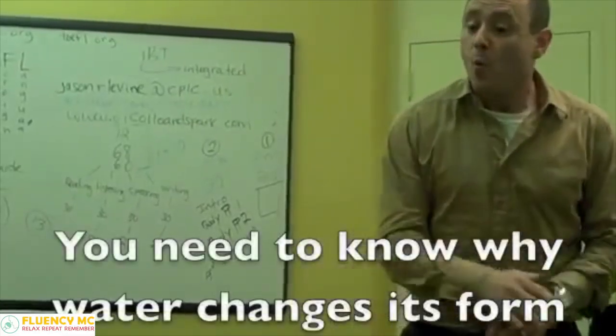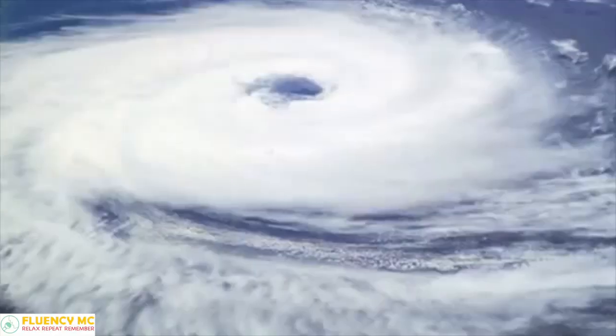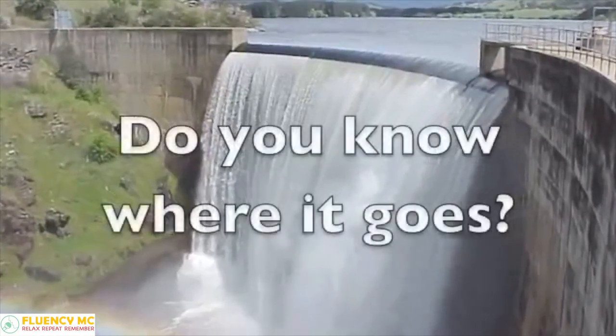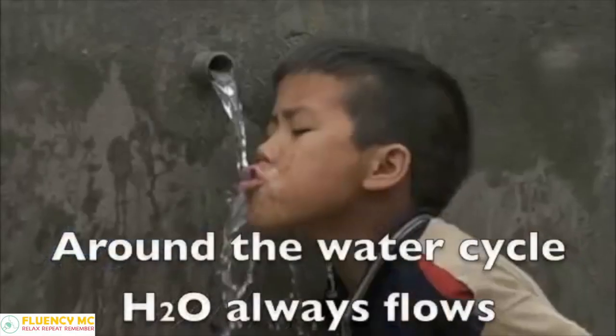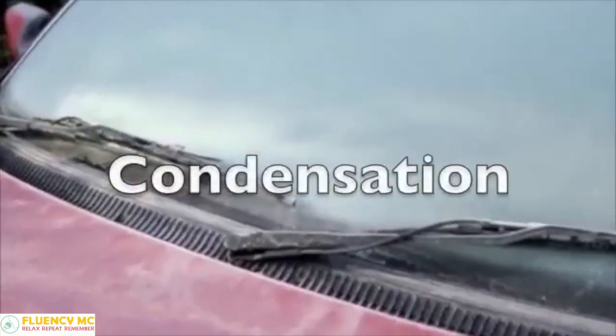You need to know why water changes its form when the temperature is cold, hot, cool, and warm. Do you know H2O? Do you know where it goes? Around the water cycle H2O always flows: evaporation, condensation.